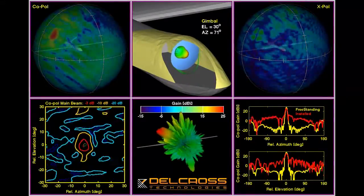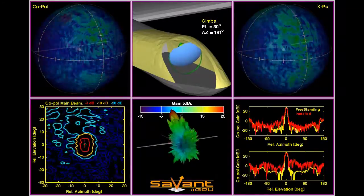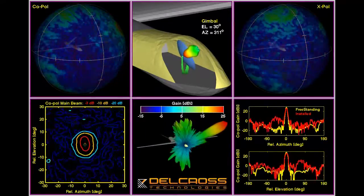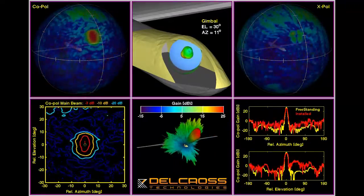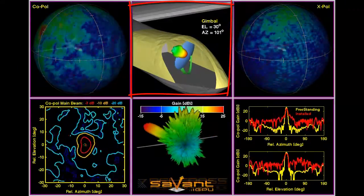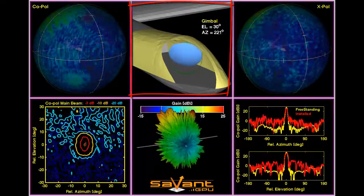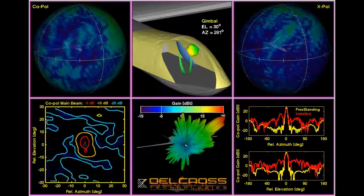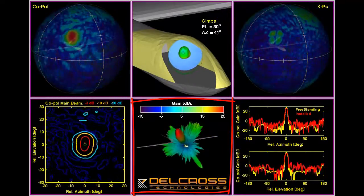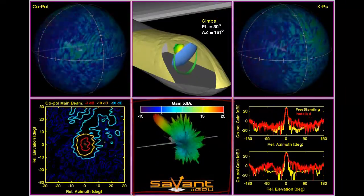These graphics are generated by MATLAB scripts based upon data and graphics produced within Savant from the 360 static antenna position simulations. Each frame is synchronized to the others. In the top center, you can see the relative position of the reflector antenna assembly along with the radiation pattern of the primary feed antenna. In the bottom center, you can see the full 3D radiation pattern of the antenna relative to the UAV body.